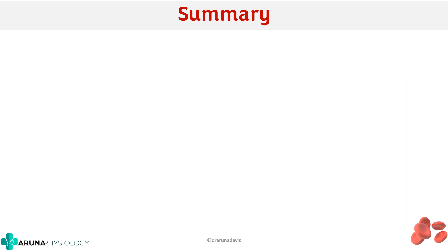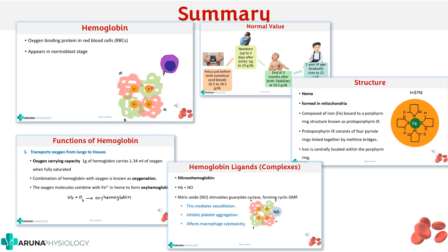To summarize, we have seen what hemoglobin is and the basic structure, then the normal values, the structure of heme, the structure of globin, the functions of hemoglobin, and finally the different derivatives of hemoglobin. I hope this video was useful for you. Thank you.